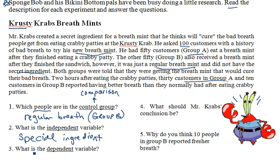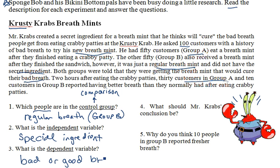The other variable we look at is the dependent variable, also called the responding variable. This is the thing that Mr. Krabs would measure to know whether or not his experiment is working. In this case, he is measuring whether or not people have bad breath. So the dependent variable would be bad or good breath. Remember, that is his measure — what does he know from this experiment?